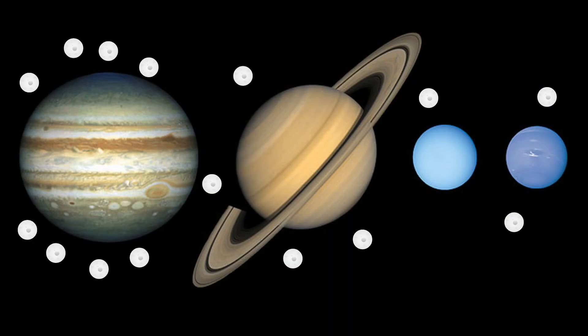The gas giants also have many moons. Jupiter has 79 moons, Saturn 62, Uranus 27, and Neptune has 14 moons.